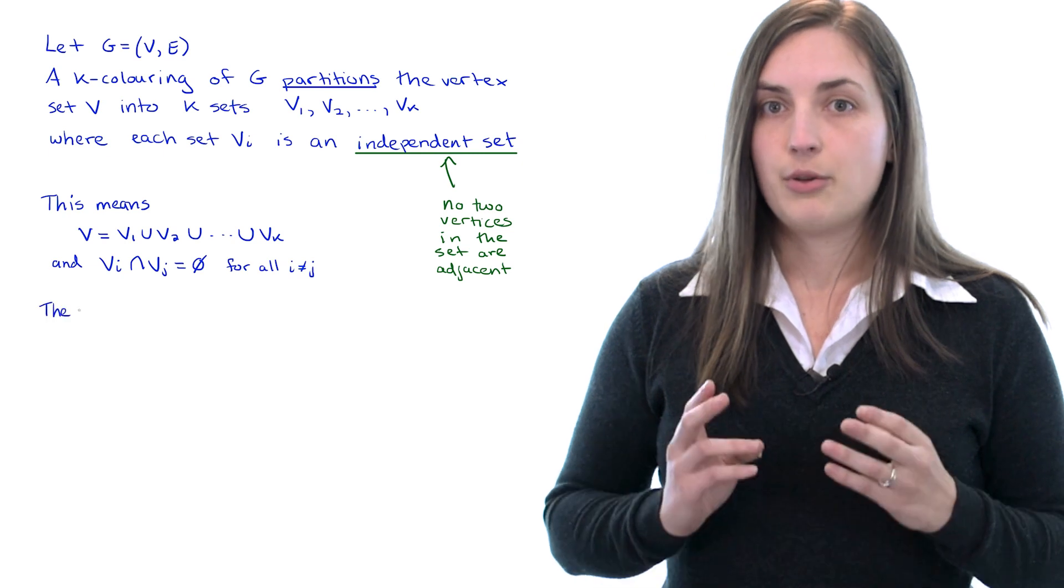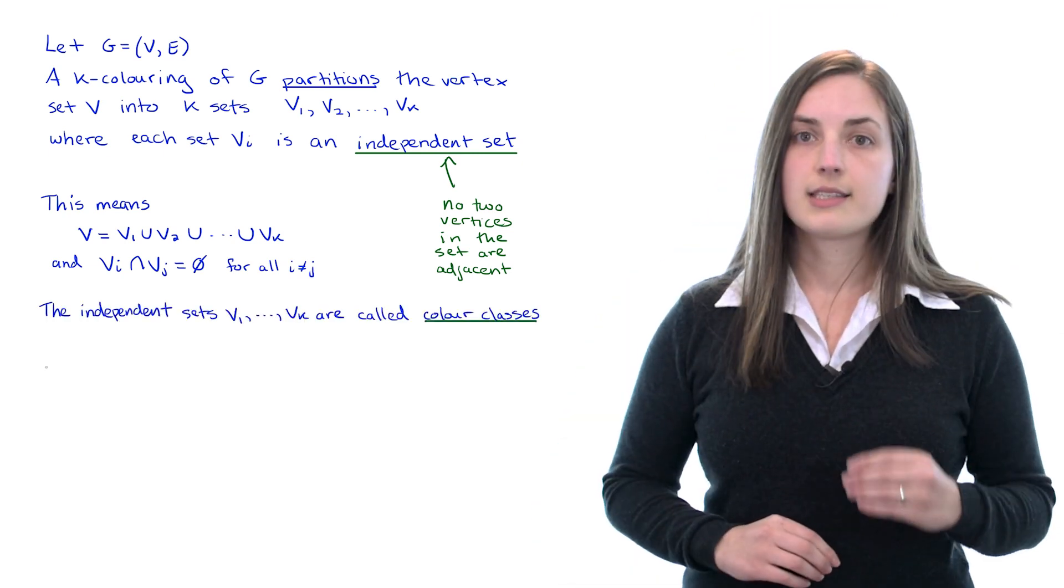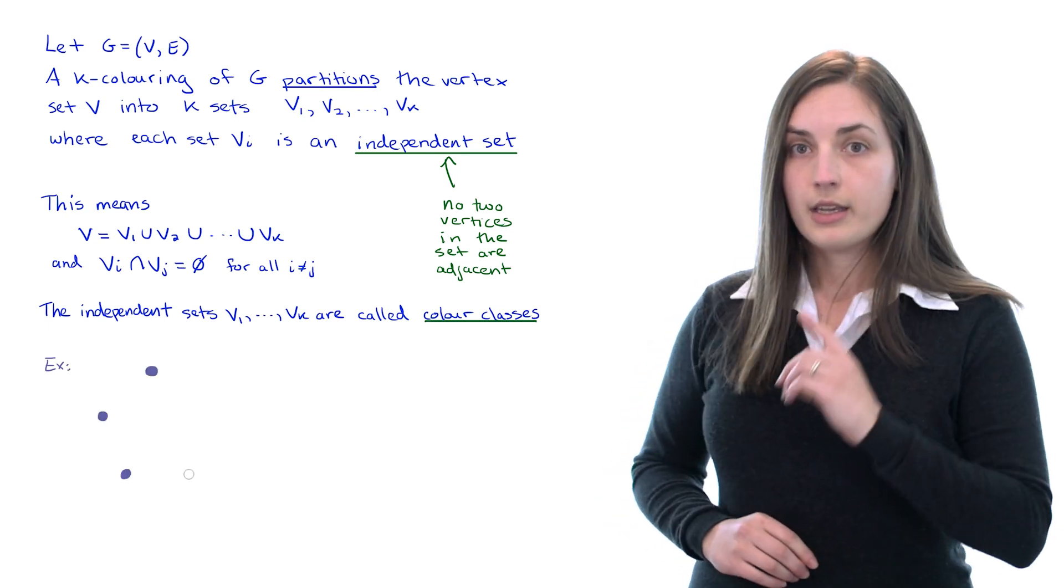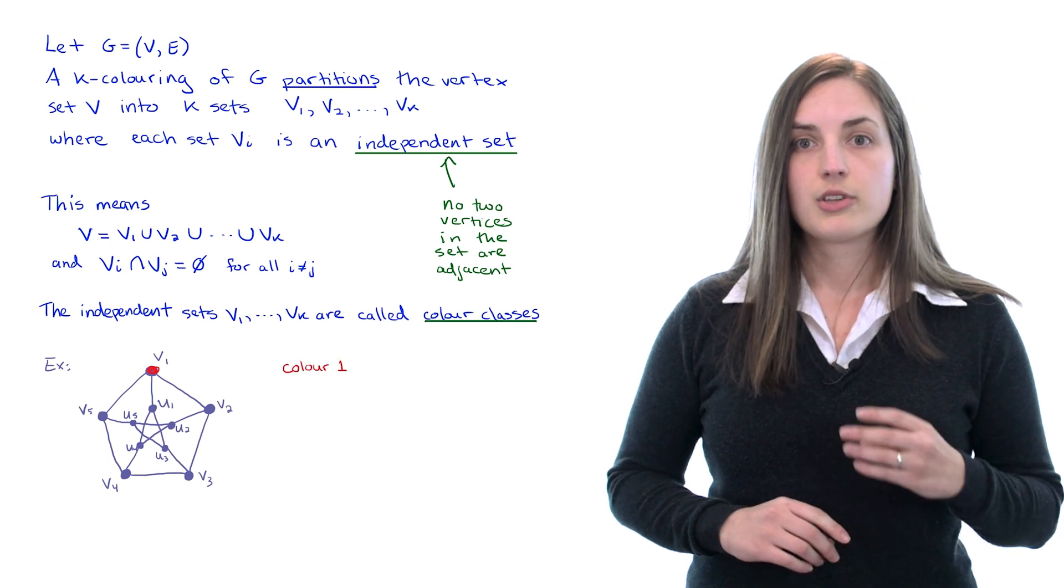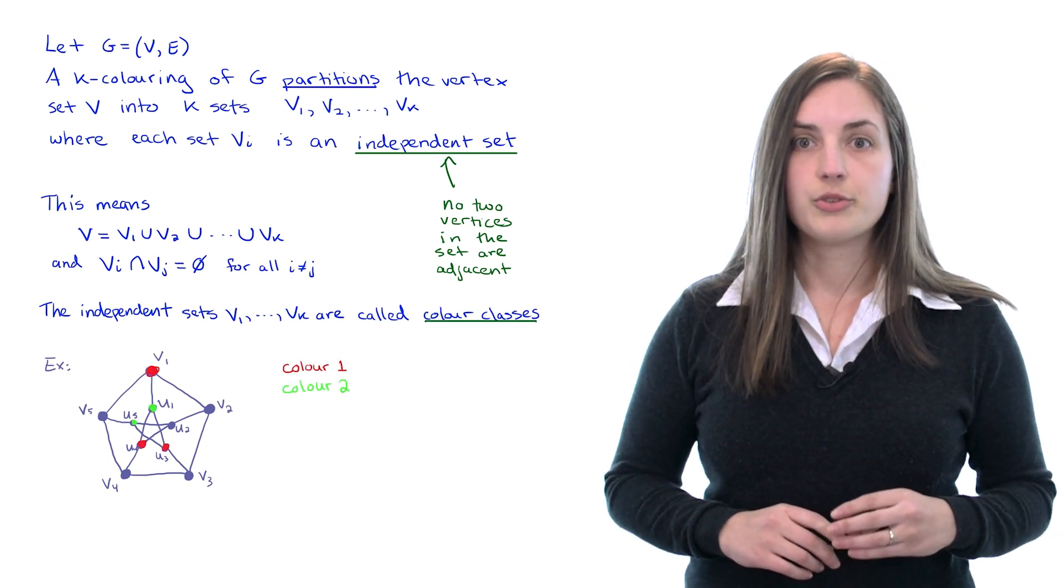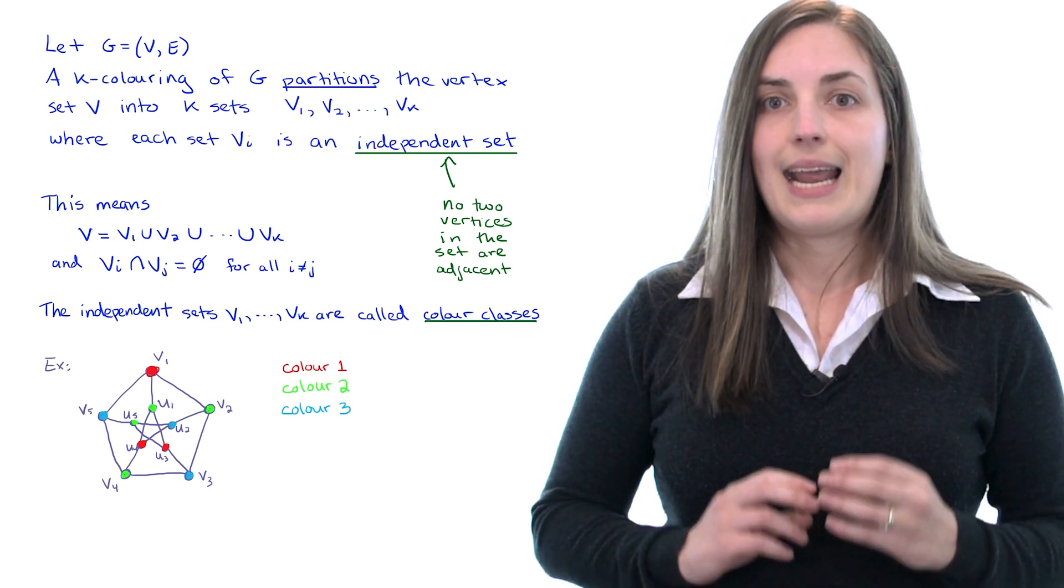We call these sets V_1, V_2 up to V_k color classes. Let's take a look at a quick example. Here I'll draw the Petersen graph and I'll start to give the vertices colors. So I'll use color one is red and color two is green and color three is blue. Now if you take a look at any given color, let's say the red set,